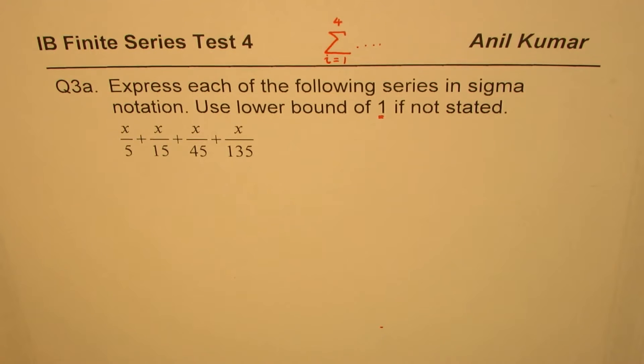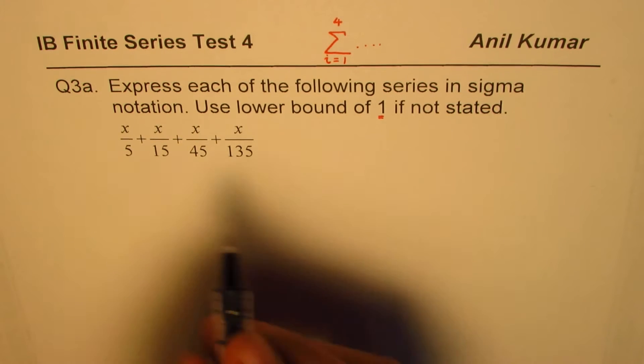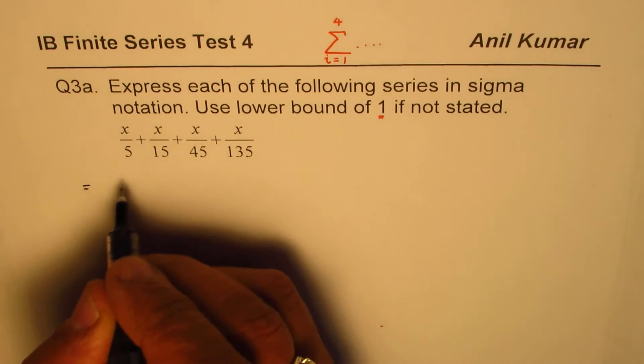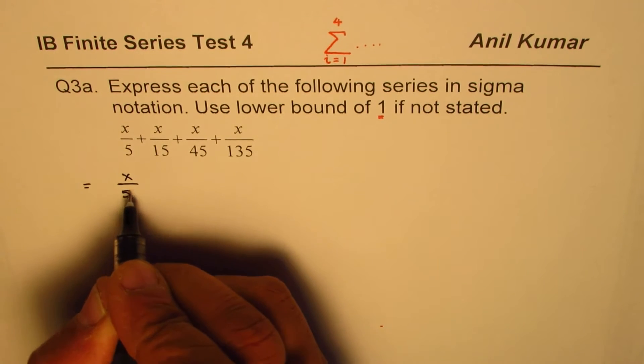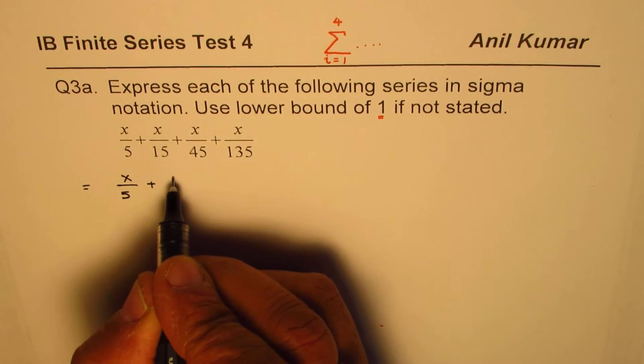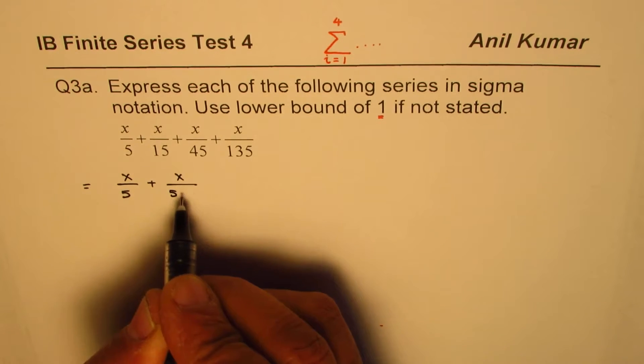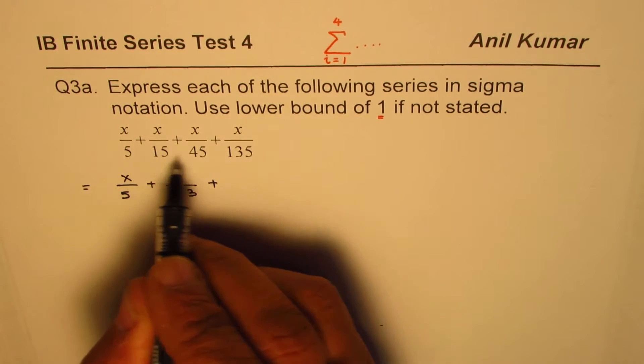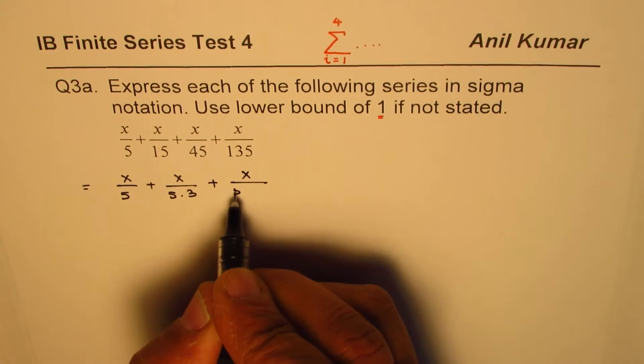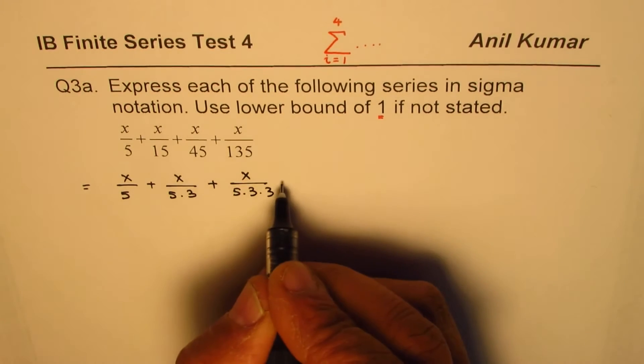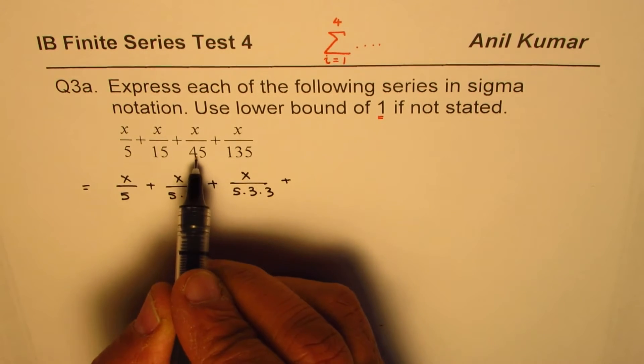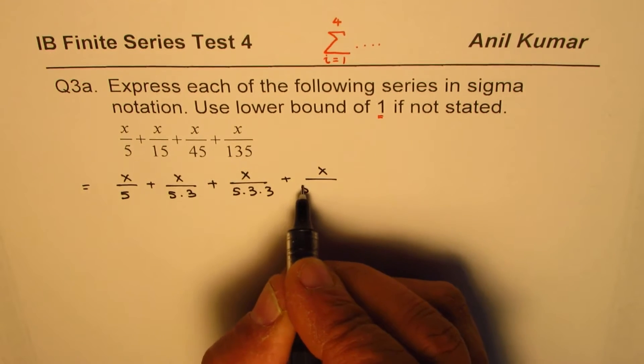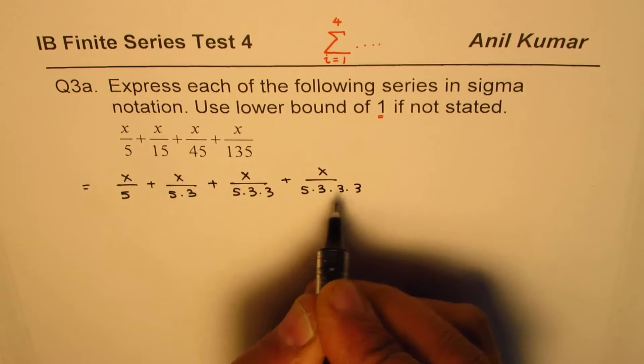For that, let's rewrite the given expression in a simpler form. Since all are multiples of 5, we could write this as X over 5, plus this is 3 times 5, so we could say 5 times 3, plus this is 9 times 5 or 3 times 15, so we could write this as X over 5 times 3 times 3. And the fourth term is X over 5 times 3 times 3 times 3. You get the idea.